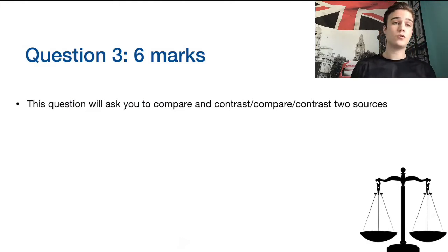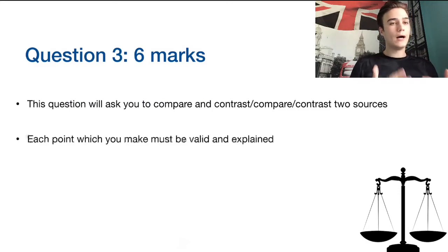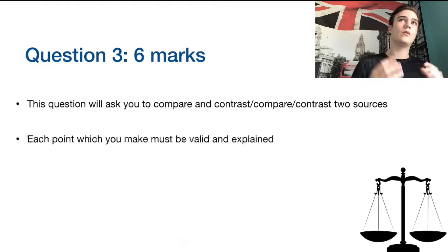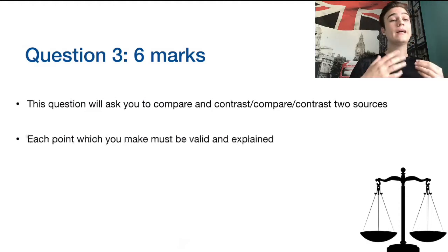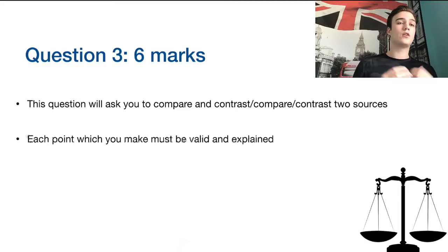These can be any of the four sources you're asked to analyze on paper one, so pay close attention to which sources you're asked to compare and contrast. In order to score high, unlike questions one and two where points could be slightly more superficial and direct, here you're expected to do a little bit more because you have a higher grade boundary for the amount of marks you can achieve. Each point needs to not only be valid and correct, but also explained.